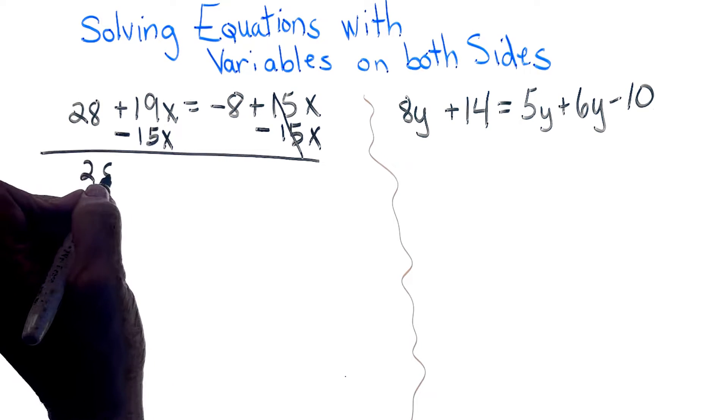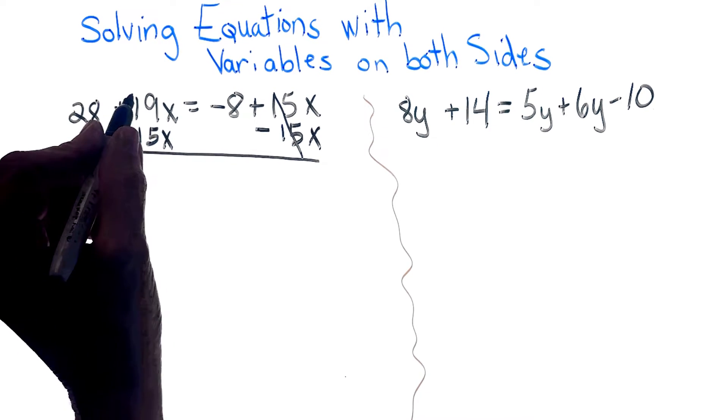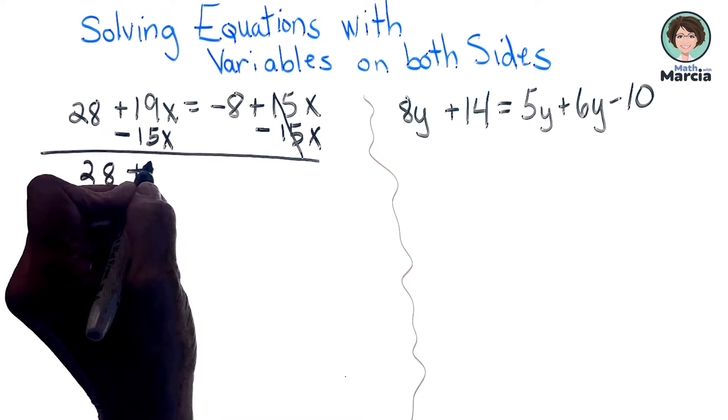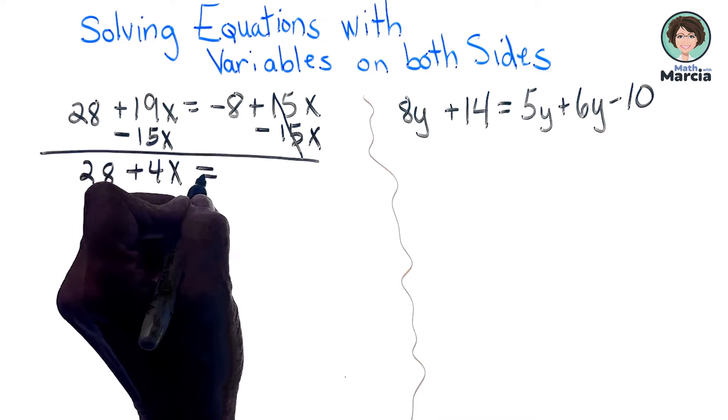I have 28, and now I'm going to do 19x minus 15x, which is plus 4x, equals a negative 8.